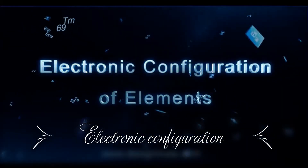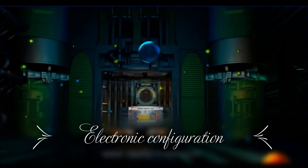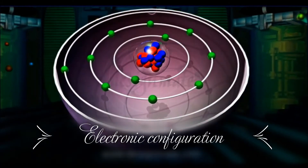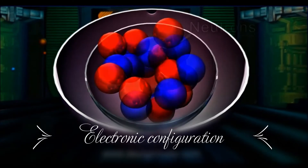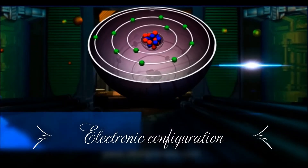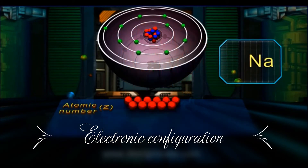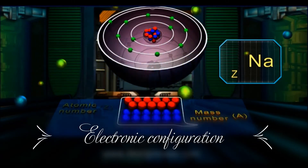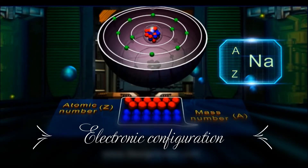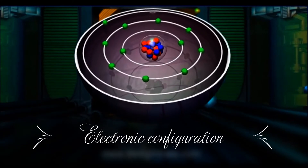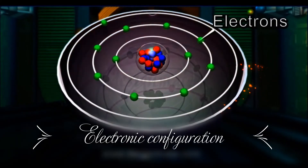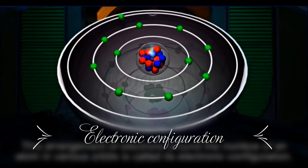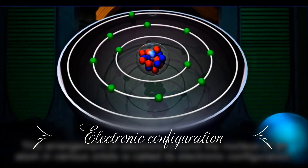Electronic Configuration of Elements. According to Bohr's model, an atom consists of a central part called the nucleus, which contains positively charged protons and electrically neutral neutrons. The number of protons in an atom is called its atomic number, represented by Z, while the sum of its protons and neutrons is called its mass number, represented by A. Negatively charged particles called electrons revolve around the nucleus in various shells or orbits. This arrangement of electrons around the nucleus in various orbits is called its electronic configuration.